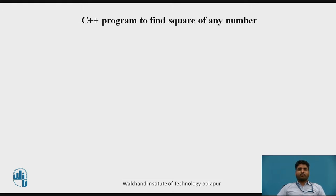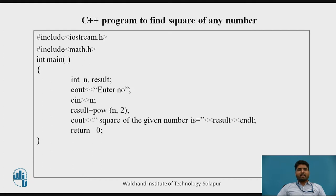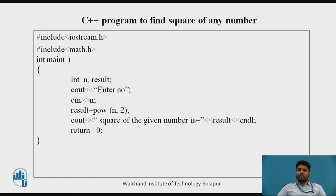The next program is a C++ program to find the square of any number. The logic is very simple: N squared. We are using two header files — Iostream and Math. In the main program, we declare int variables N and result. Cout displays 'enter a number' and the number entered by the user is stored in N. The logic here is: result equals POW(N, 2), where N is the base and 2 is the order — so N raised to 2 gives us the square of any given number.